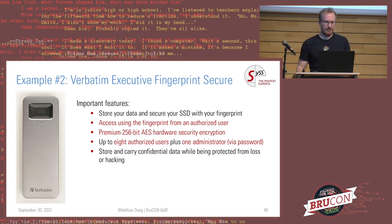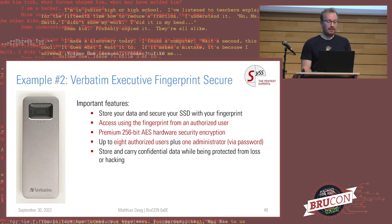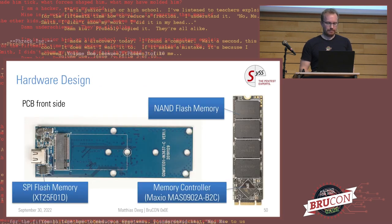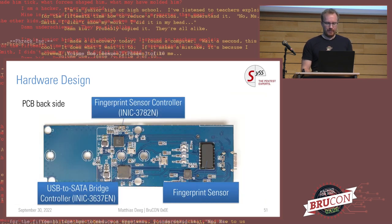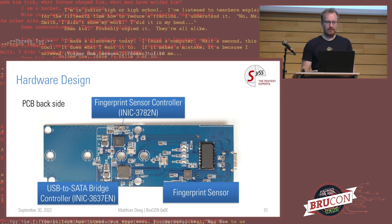The second device functions differently — instead of a keypad it has a fingerprint sensor, but otherwise has the same AES encryption features and claims to be secure. It also has an administrative access feature using client software for Mac or Windows. The components are similar: NAND flash memory on an M.2 SSD, SPI flash memory with firmware, a memory controller, a fingerprint sensor with its controller, and the same USB-to-SATA bridge. The fingerprint sensor has no publicly available datasheet, making it an interesting potential attack vector. However, I was able to hack this device in a much simpler way.